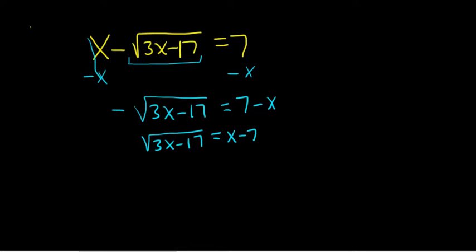Now we have the square root by itself, so we can square both sides. That's the goal. You isolate the square root and then square both sides to eliminate the square root.